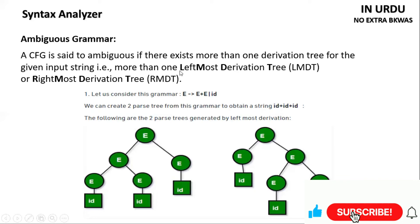Ambiguous Grammar means we have one expression with more than one parse tree. We can have one leftmost parse tree or one rightmost parse tree. We have an expression given — this is Ambiguous Grammar because it has more than one type of derivation tree, as shown below.